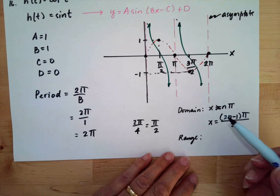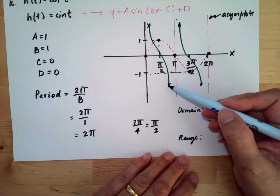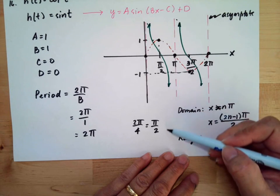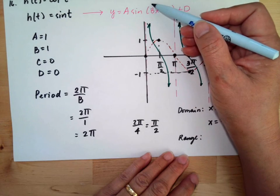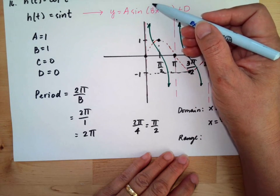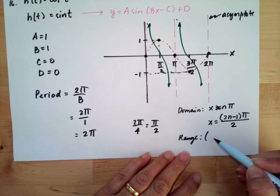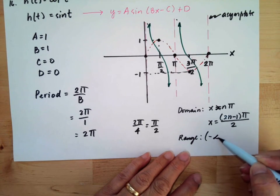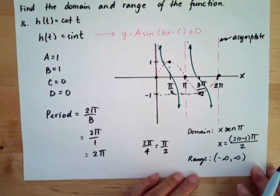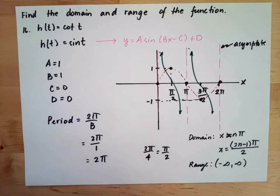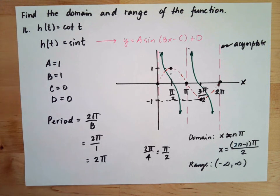For the range, the y-coordinate goes down to negative infinity and up to positive infinity, as shown by the arrows on the graph. So the range is (−∞, +∞), or all real numbers. To solve this problem, you need to remember how to graph our trigonometric functions.